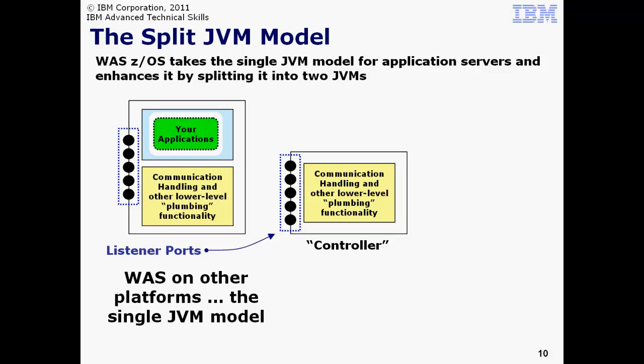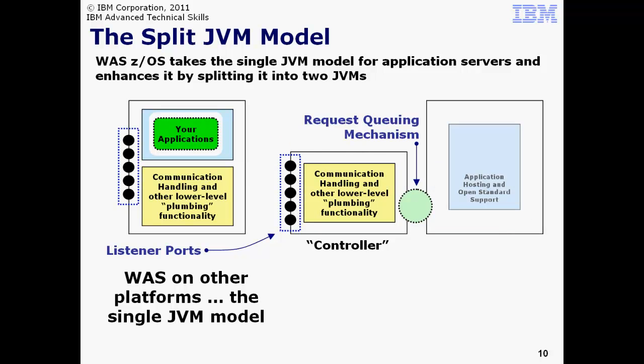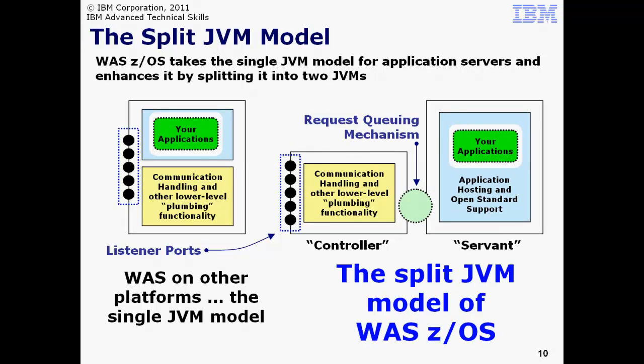Note that the higher level open standard support and your applications have not yet entered the picture. A request queuing mechanism is added. As you'll soon see, this is ZWM. The higher level open standard support and the application containers are hosted in an address space with a JVM separate from the controller. This we call the Servant or Servant Region, or SR for short. And that is the split JVM model of WAS z/OS.